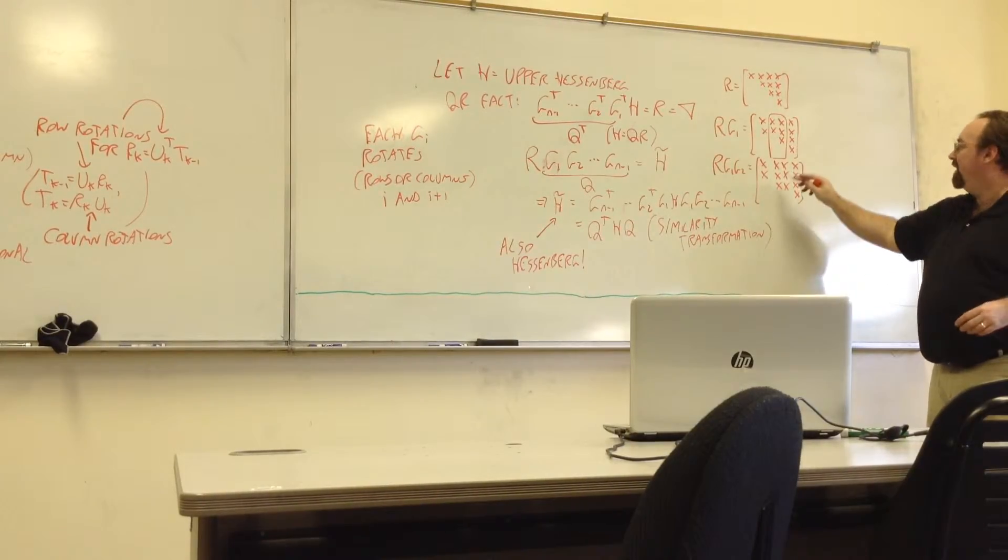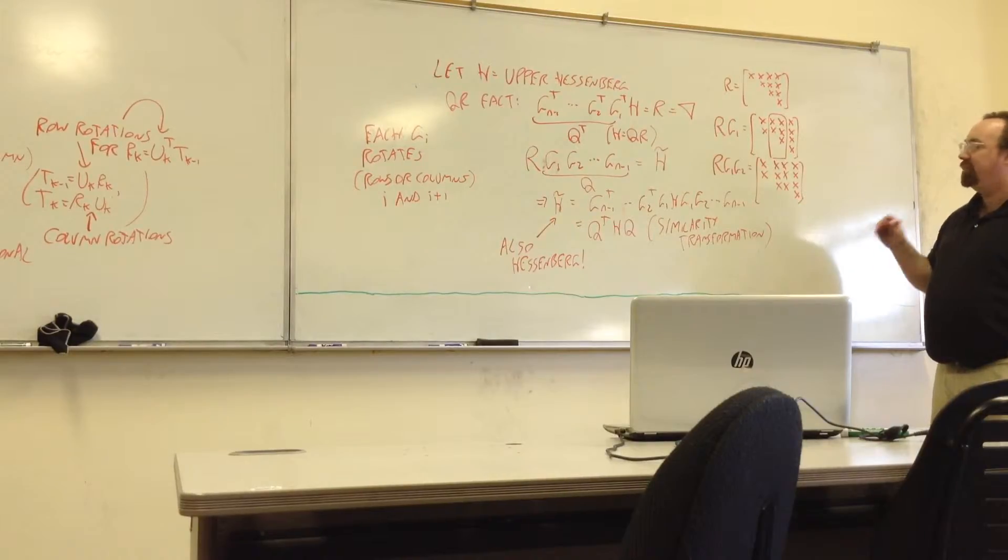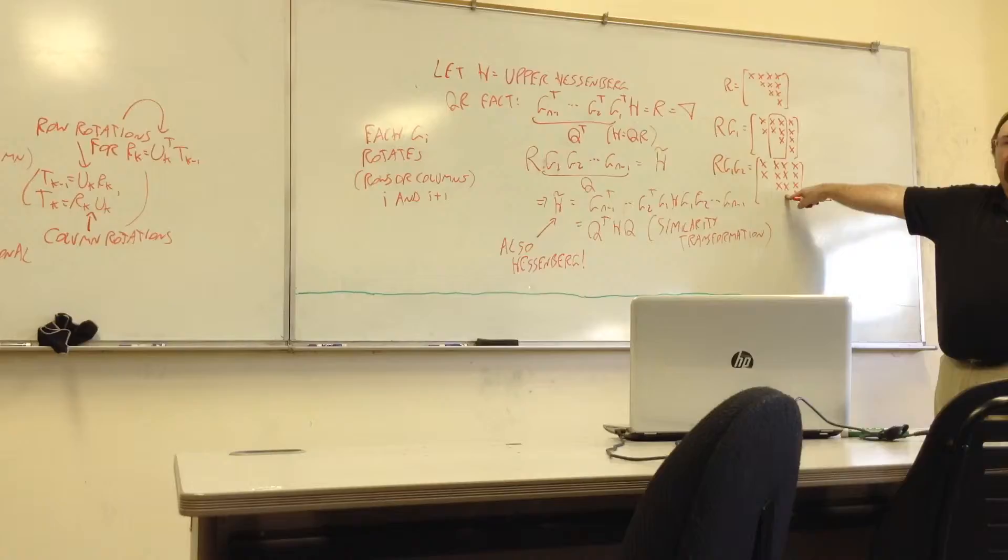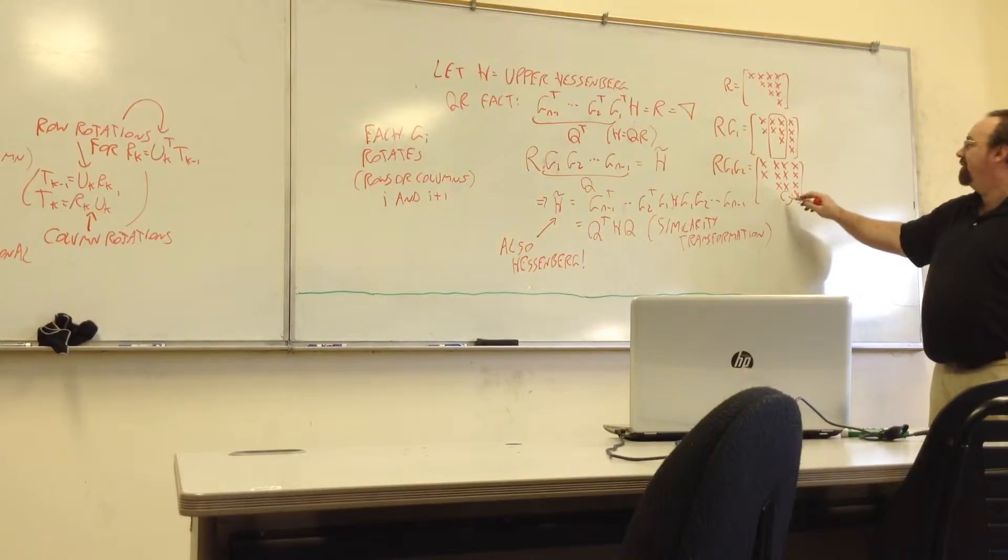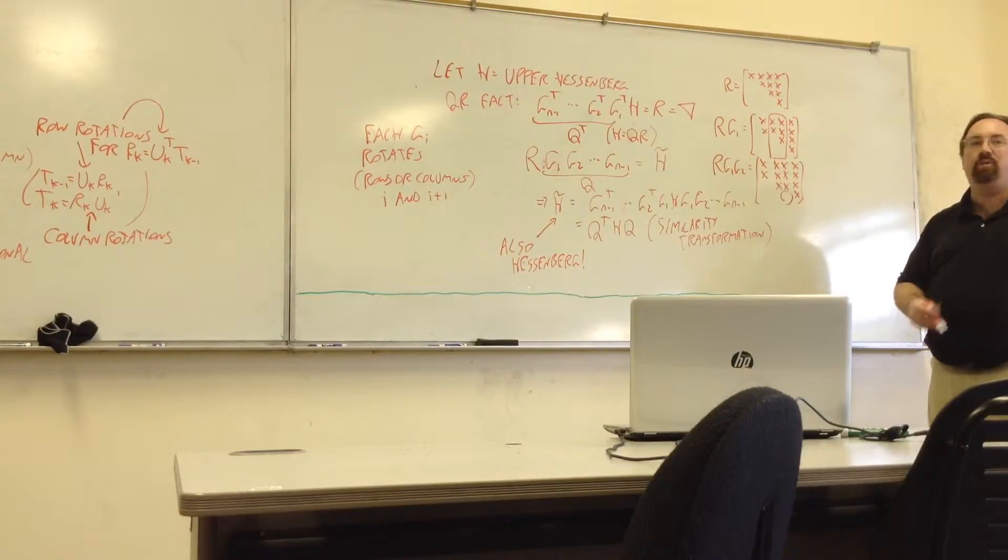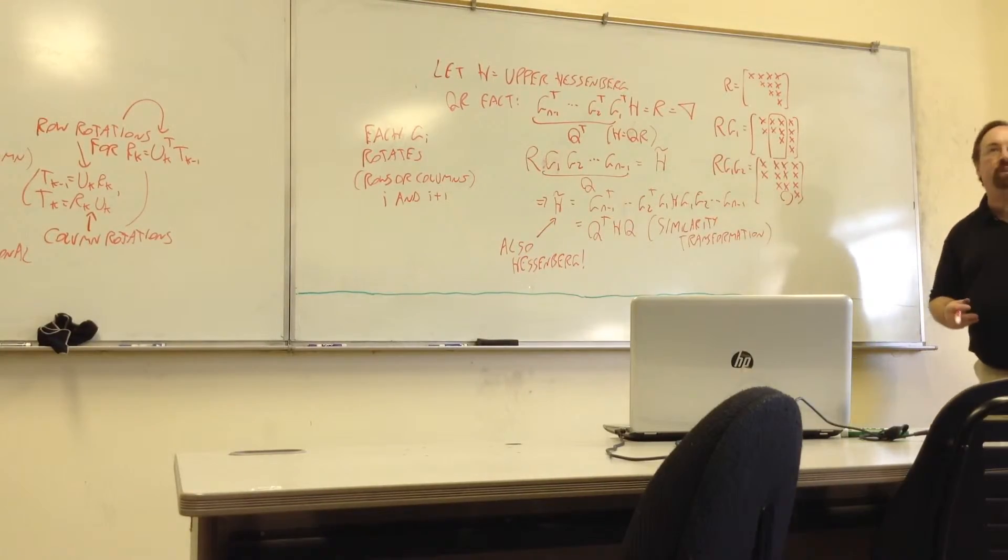Anything else is fair game. So now, we have this. And if we apply one more column rotation, this entry down here, that's still zero at this point, will likely become non-zero. So we get upper Hessenberg form. So it's because of which columns are rotated, that's why we're guaranteed to keep this Hessenberg form from beginning to end.